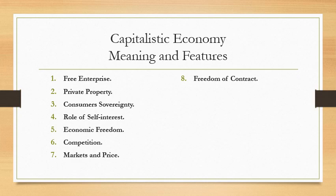Feature 2: Private Property. In a capitalist economy, all means of production are privately owned. Private property implies that the owner of property can use it in any way he likes.